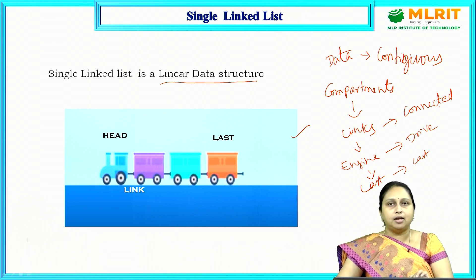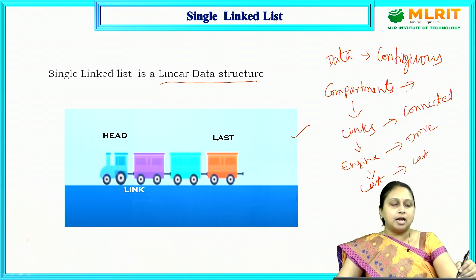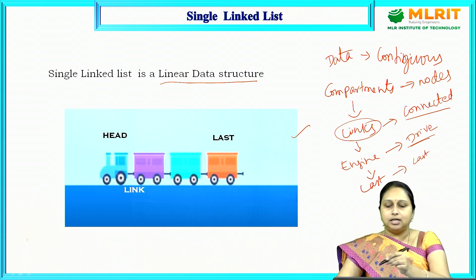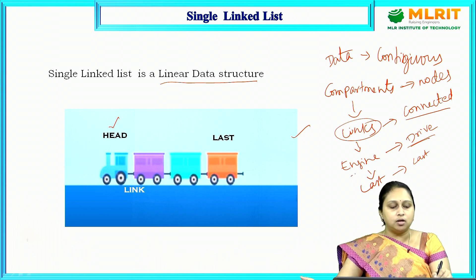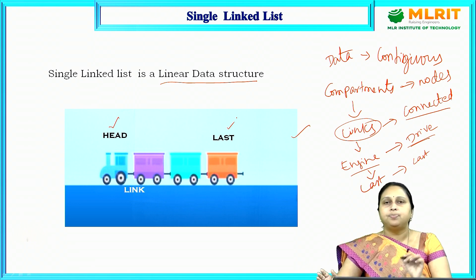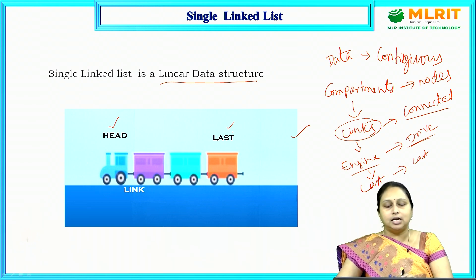We can convert the train structure into a single linked list: the compartments are represented as nodes, the links between compartments are represented as links between nodes, the engine represents the head (which drives the train), and the last compartment — which has nothing connected after it — represents the last node of the linked list.